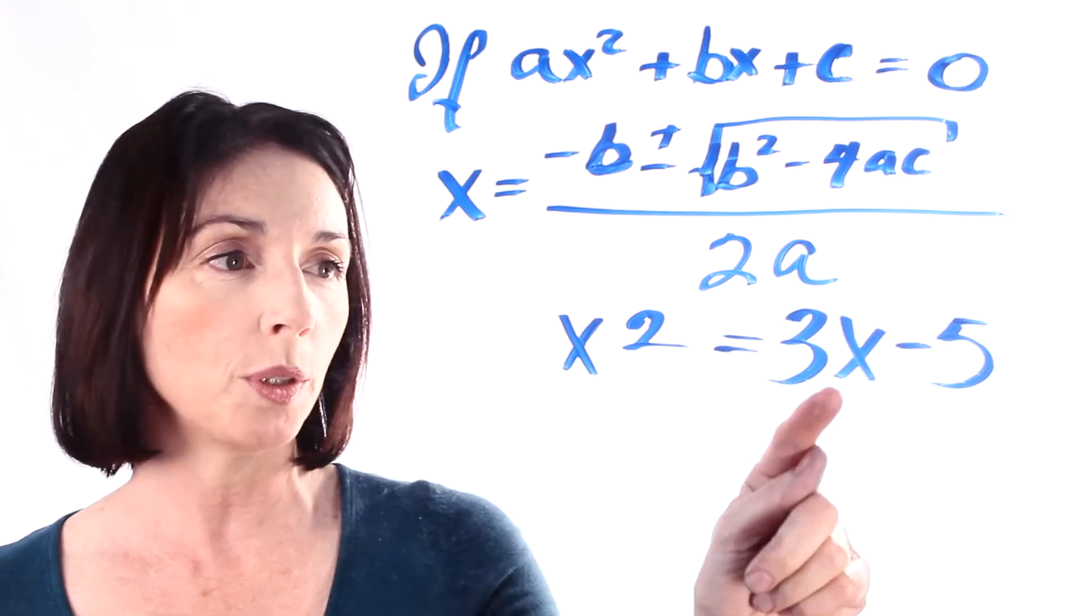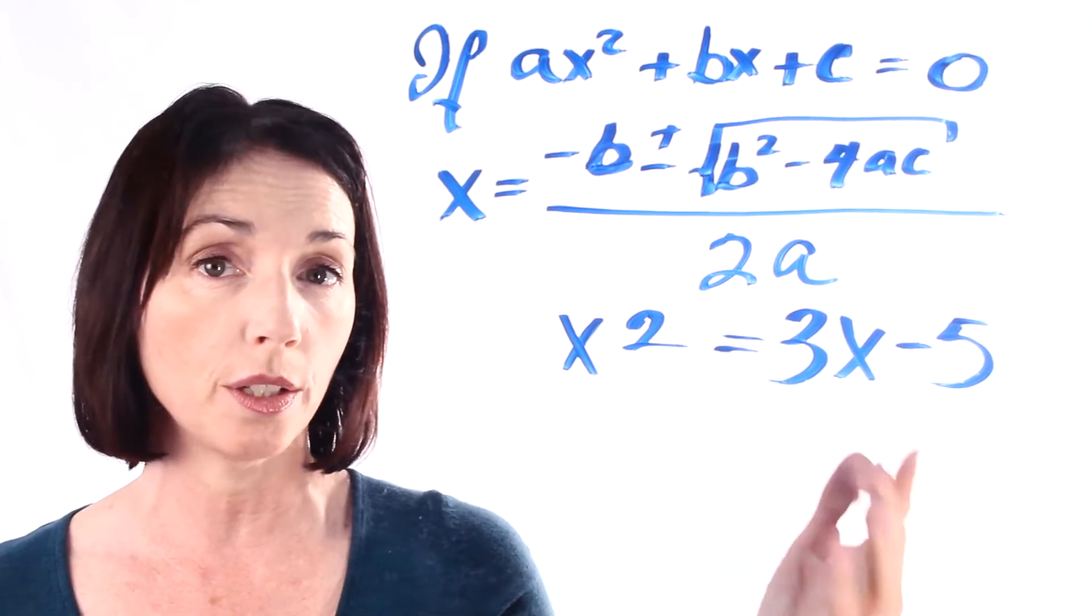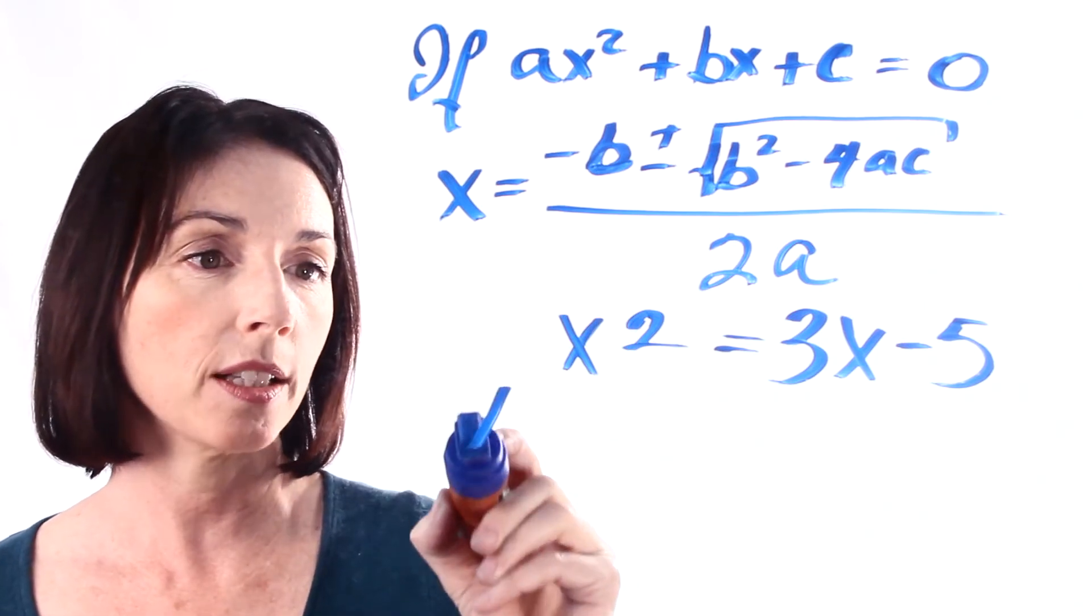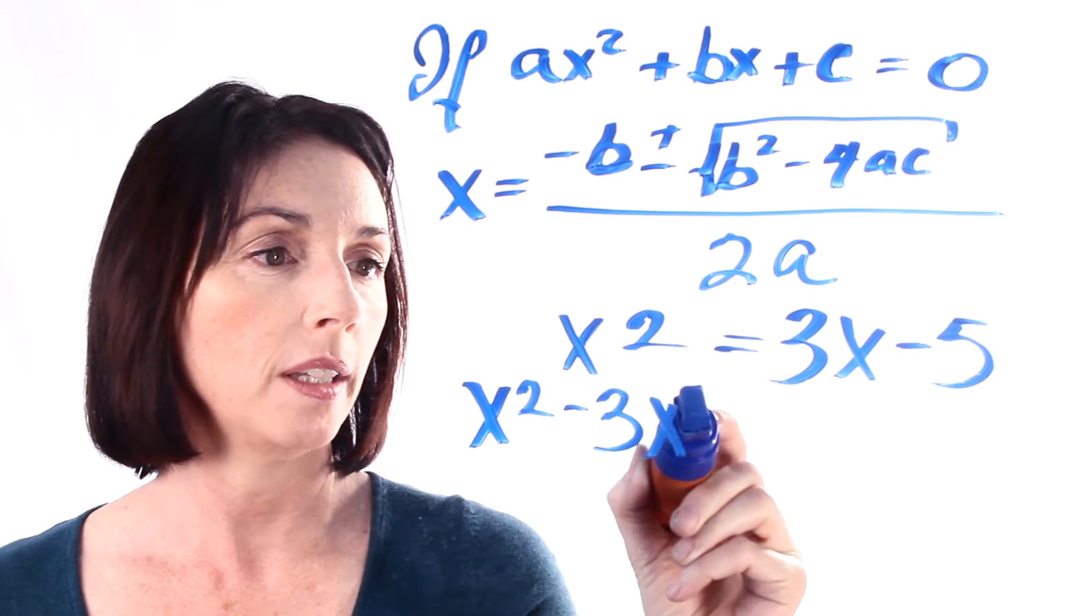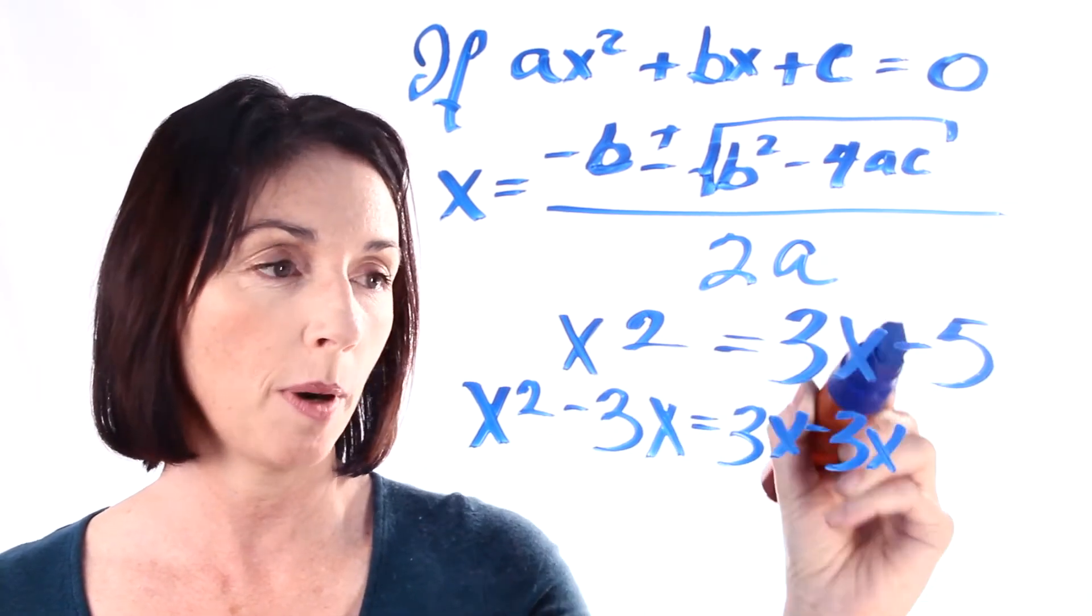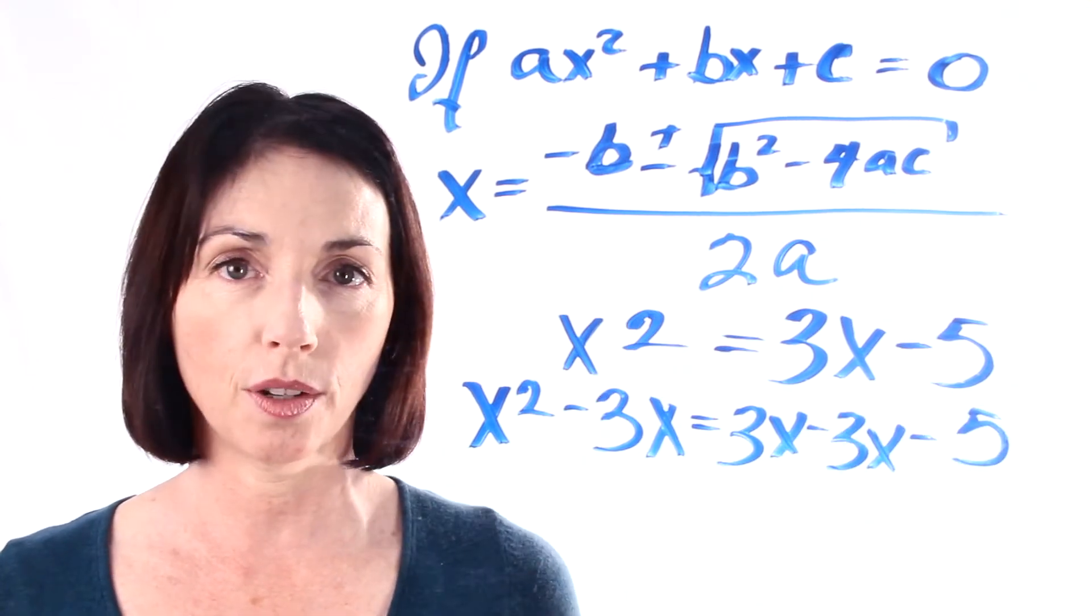So we want to move this 3x over to this side of the equation, and since we're adding 3x here, we can do that by subtracting 3x from both sides. So we have x squared minus 3x equals 3x minus 3x, and we keep our minus 5. Now 3x minus 3x is just zero, so that goes away.